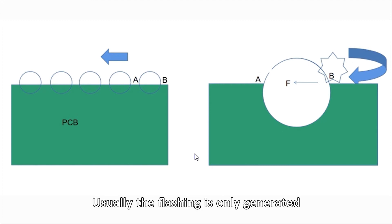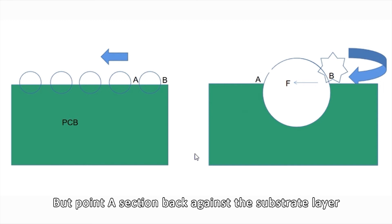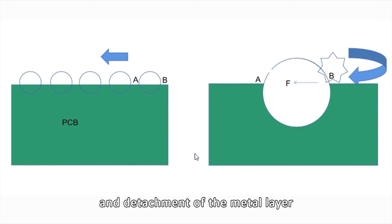Usually flashing is only generated at point B and not at point A. The milling tool will cut to point A before reaching the cross section of point A, but the point A section backed against the substrate layer effectively prevents the extension and detachment of the metal layer, as long as the milling tool is not seriously worn and the cutting force is sufficient. The cross section of point A will be very smooth with no flashing.